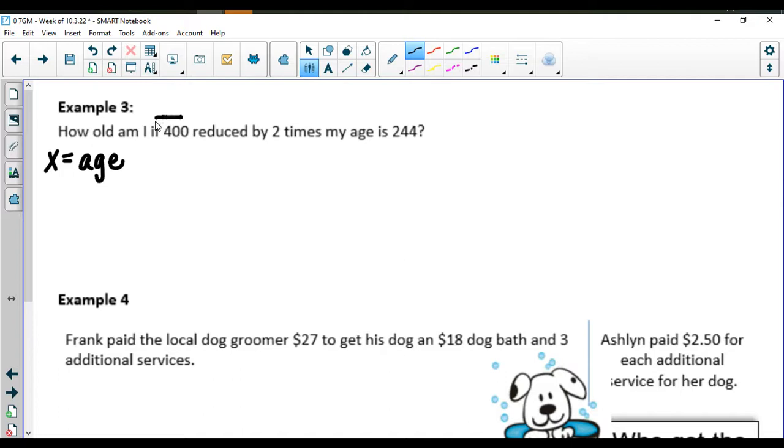We're starting off with 400 and we're reducing it. Reducing would signal subtraction and we're doing two times my age. Well times means times and we don't know my age. So we have X is 244.